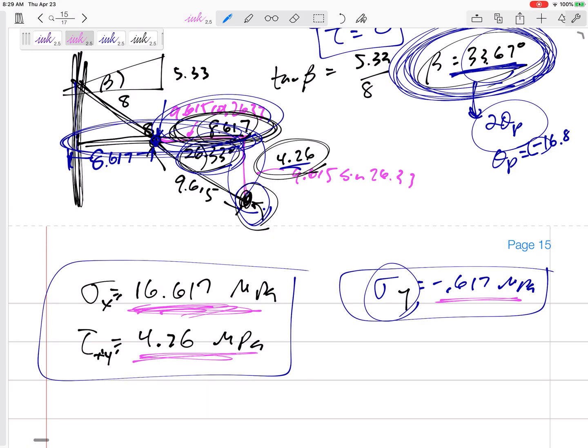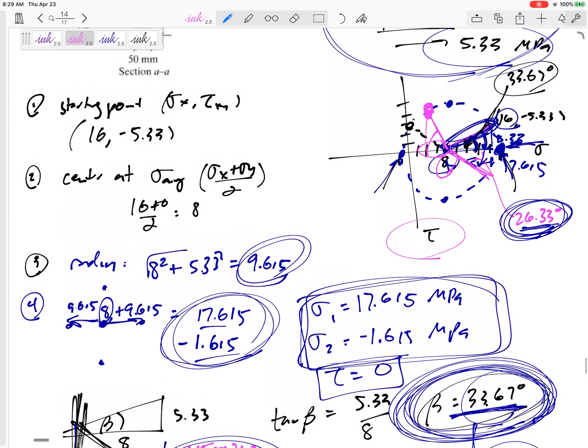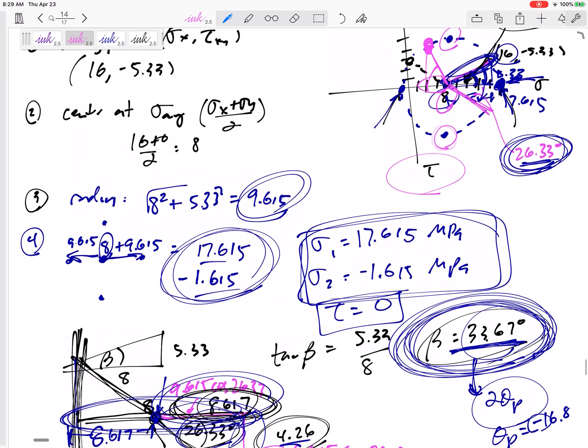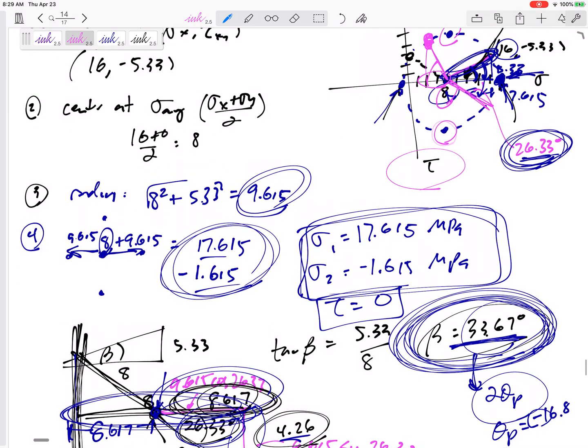Okay. And then another thing I can ask for is what is the maximum in-plane shear stress? That's the radius. Maximum in-plane shear stress is the radius, 9.615. What are the normal stress values at this point? You know it from Mohr's circle, but you also know it's just the average. So it would be 8.